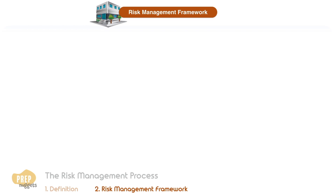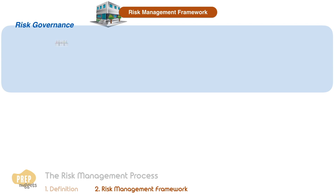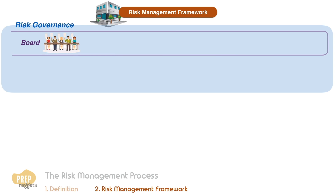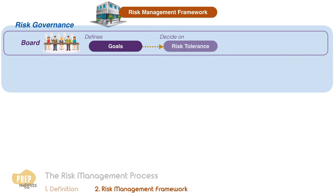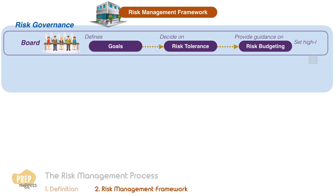At the very top is risk governance, where the board committee defines the goals of the organisation and in turn decides on its risk tolerance level. The board may additionally provide guidance on risk budgeting — that is, how much or where broad categories of risk should be taken. The board is also involved in setting high-level policies that will affect most risk management processes.